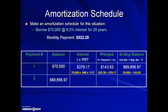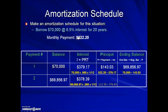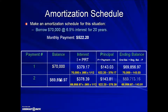We begin the process again. We owe less, so our interest will be slightly less. It's still calculated using the simple interest formula: the principal — the amount owed after the first payment — times the interest rate of 6.5% for one month, one-twelfth. That interest amounts to $378.39. That's subtracted from the monthly payment and the leftover amount is equivalent to the principal of $143.81. Taking the principal portion and subtracting it from the balance gives us an ending balance of $69,713.16.